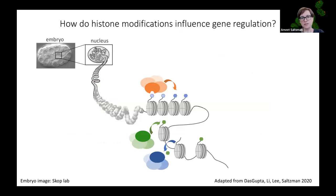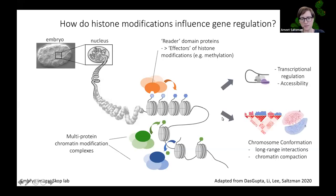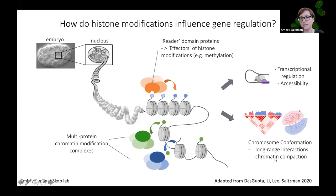Histone modifications are deposited by multi-protein chromatin modification complexes. There are also complexes that remove these modifications, and some complexes have reader domains that recognize particular marks and mediate downstream regulation. Together these mechanisms affect gene expression both locally — regulating transcription and chromatin accessibility — and globally, influencing chromosome conformation, long-range interactions, and chromatin compaction.